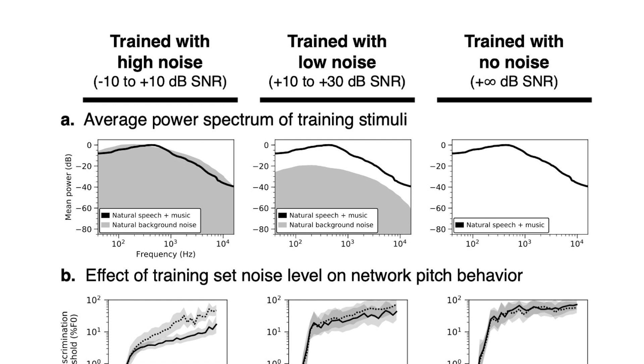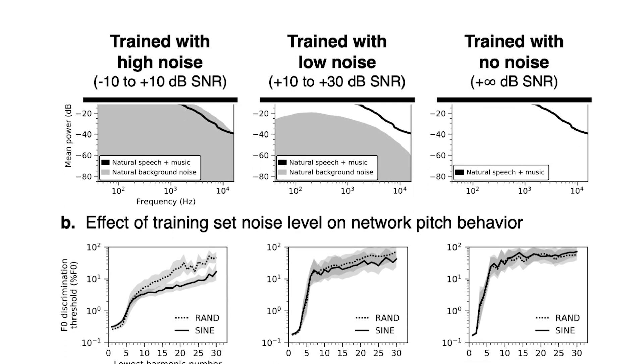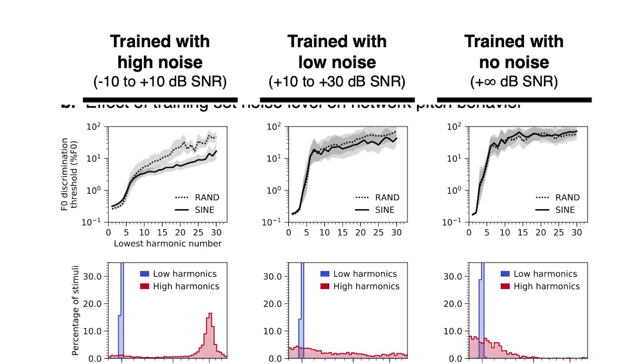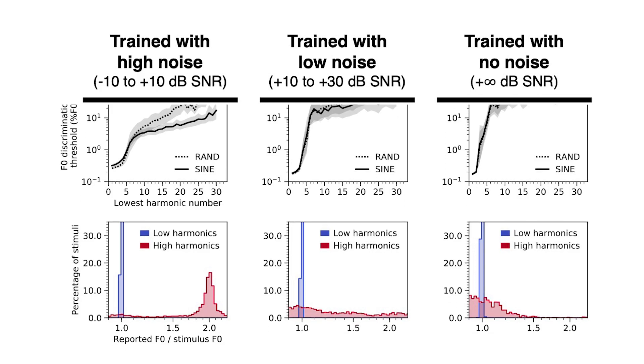What if the model was instead optimized for some idealized world where there were never competing sources — you only ever heard one sound perfectly at a time? How might that have shaped the pitch strategy that humans use? We can test this in our model by training on sounds with no background noise. When we did this, we found that the model exhibits very un-human-like behavior; in particular, it's not able to replicate key aspects of human pitch perception.